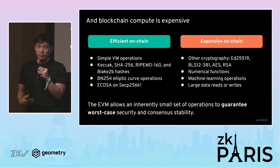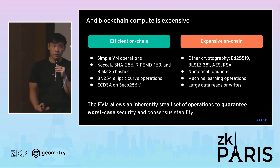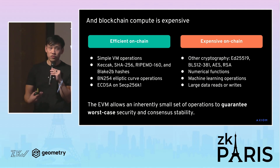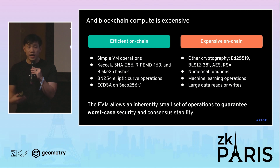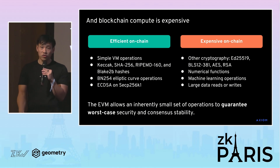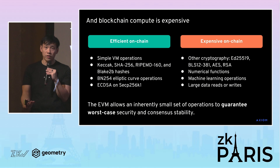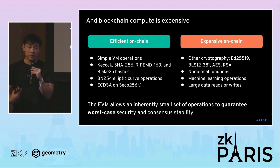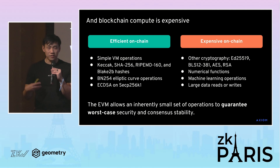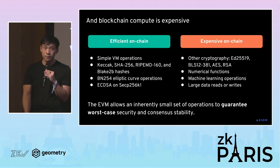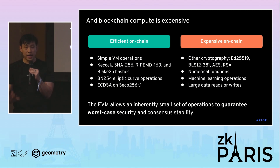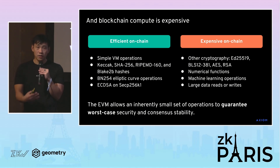Compute on-chain is very expensive. There are certain precompiles that make some operations cheaper, but we're not going to add arbitrary computation as precompiles. To add a precompile to the EVM or any blockchain VM, we have to be very sure that it doesn't open up a DDoS attack vector on transaction validation. It doesn't really make sense to use social consensus to go through a list of all computations. As a result, we have this very data-limited and compute-limited on-chain compute environment.